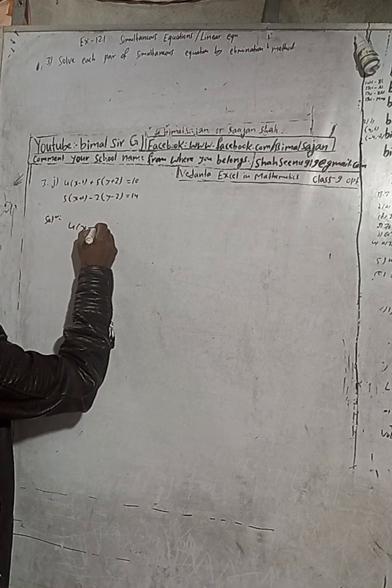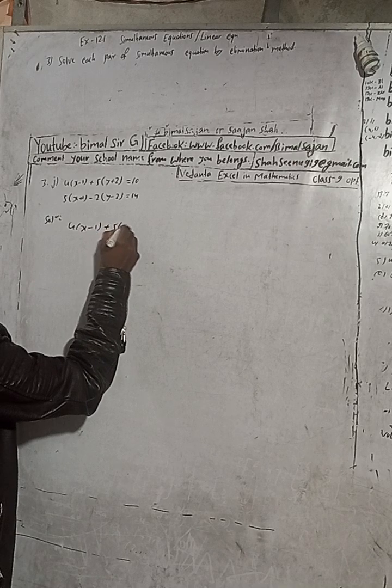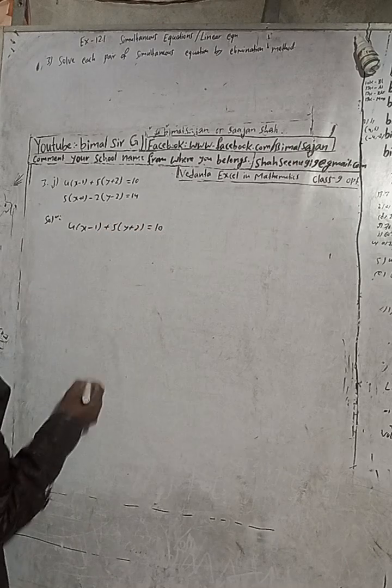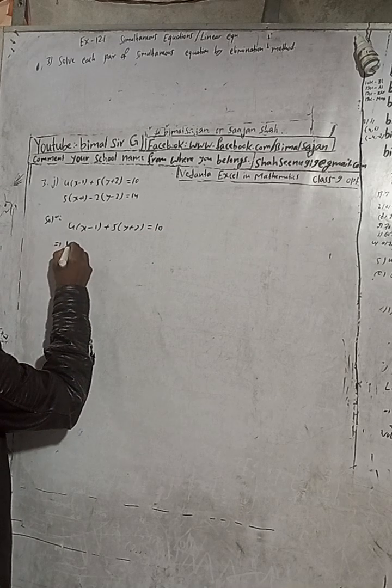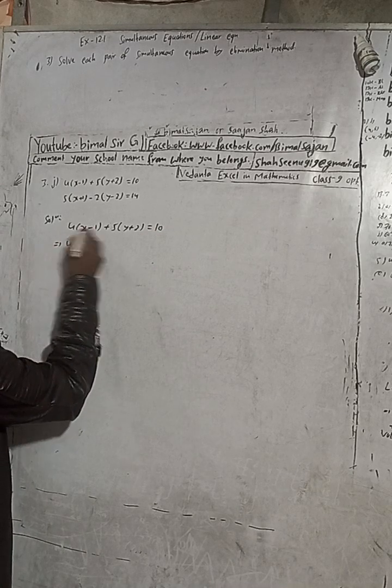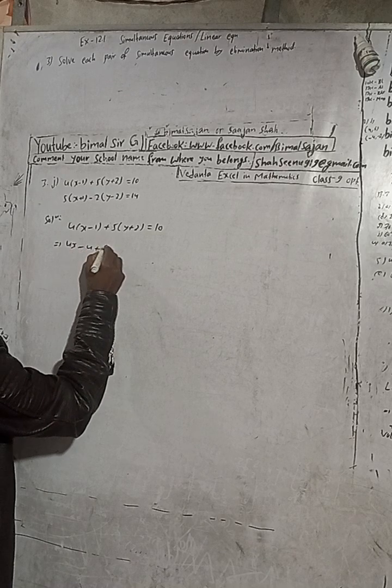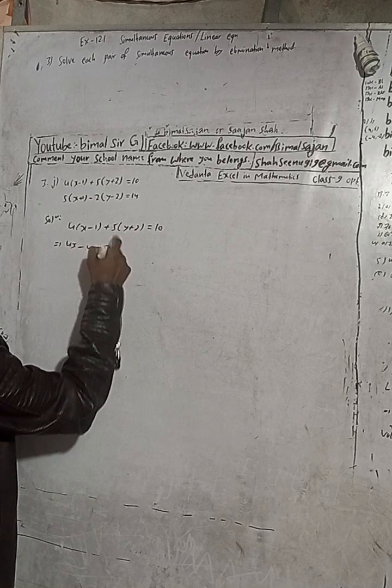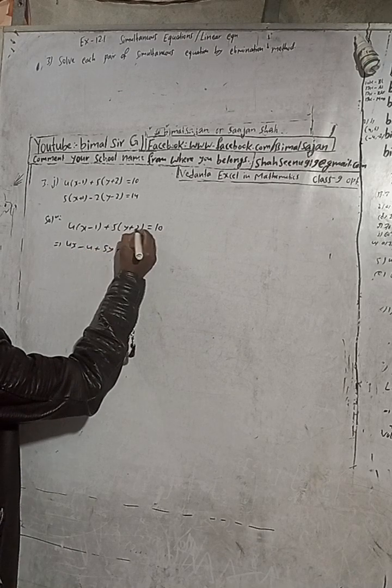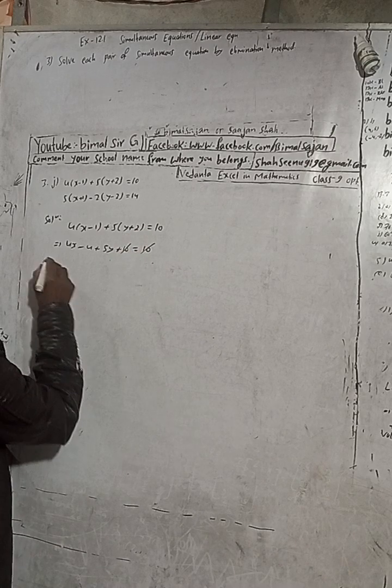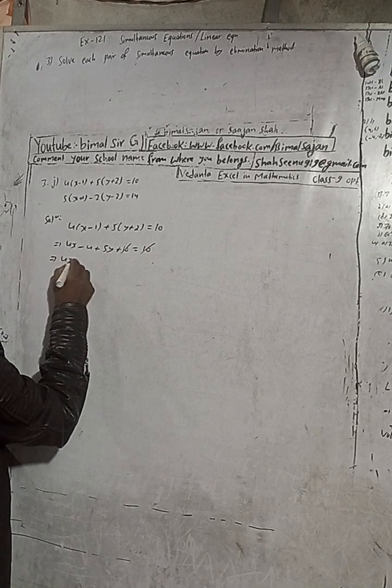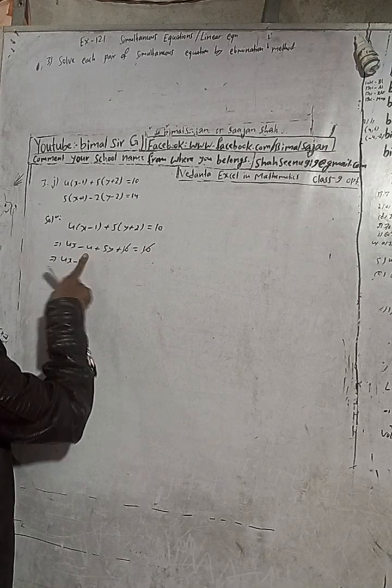4(x - 1) + 5(y + 2) = 10. Okay, now this 4 into 4x minus from the 4 plus 5y, I have to get 10 is equal to 10, so 10 cancel. This is 4x minus 4.